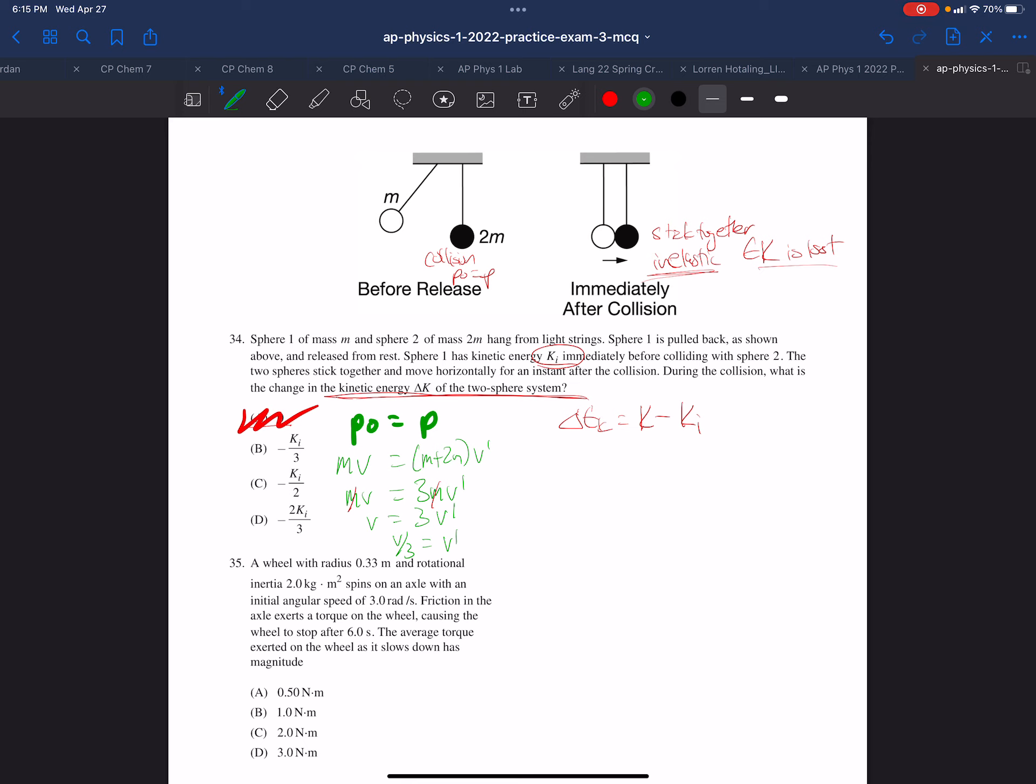Next we can move on to the kinetic energy. Now the kinetic energy afterward is 1 half m, that since it's stuck together it's m plus 2m, and the new velocity v prime squared. From that we subtract the initial kinetic energy which is just 1 half mv squared.